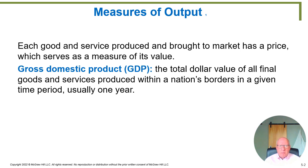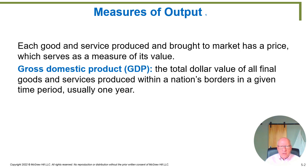We're now going to measure the output. Each good and service that's produced and brought to market has a price which serves as its measure of value. Remember from the previous work we did on supply and demand — where does the price come from? The price is the interaction of what consumers value and what it costs producers to produce the good. When you reach the equilibrium point, you find the balance point in the price. Economists use that as our best figure for how much something is worth — it's worth its market price because that's what people are willing to pay for it. So as long as you agree that willingness to pay is a good way to measure the value of something, you're now able to use the mechanism we're going to talk about.